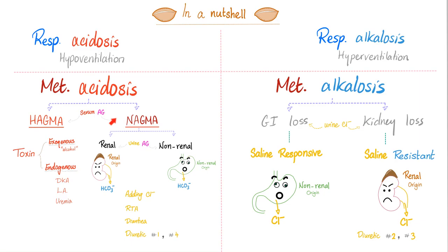The difference between HAGMA and NAGMA is based on the serum anion gap. If the serum anion gap is high, it's HAGMA; if it's normal, it's NAGMA. HAGMA is usually a toxin — most of the time an exogenous toxin: alcohol, methanol, ethylene glycol, alcoholic ketoacidosis, etc. Sometimes the toxin is endogenous: diabetic ketoacidosis, lactic acidosis, uremic acidosis.